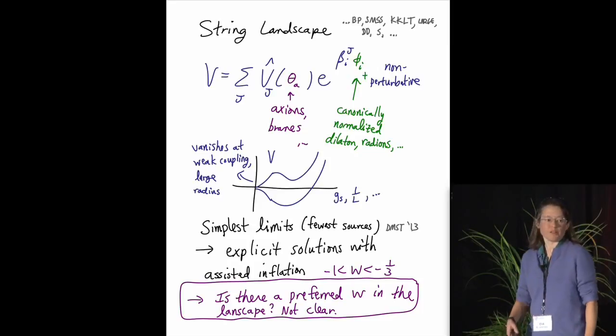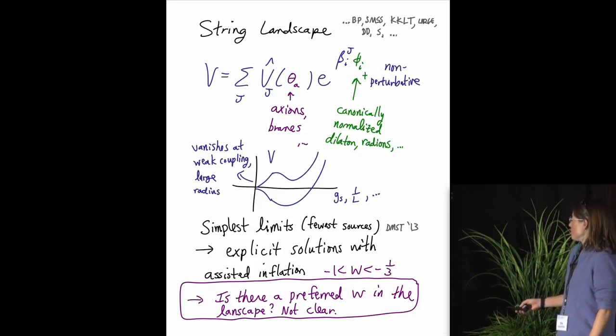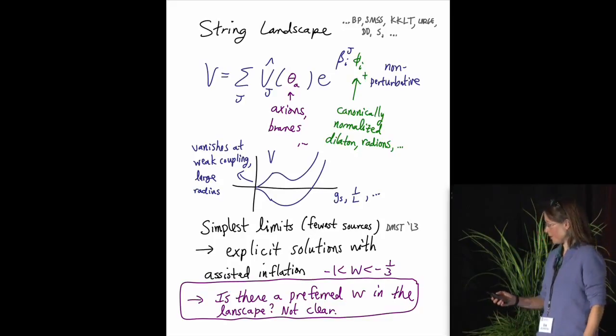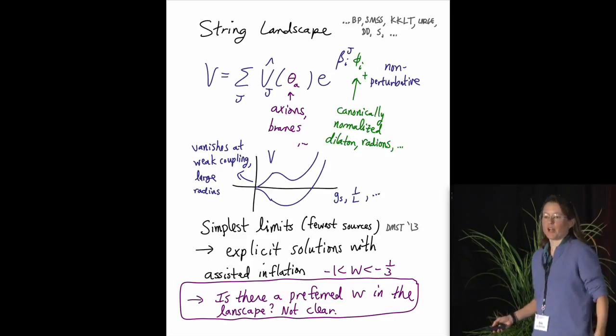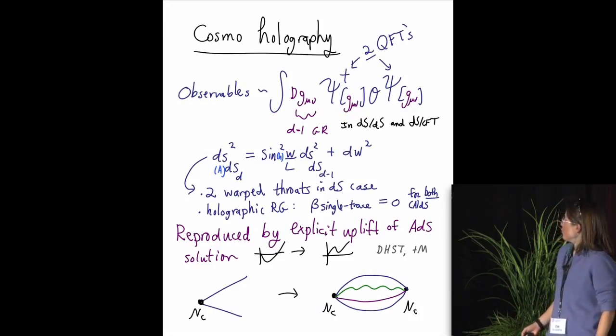And there's a question that remains in this whole business, which is, is there a preferred equation of state W in the landscape? It's really not clear, and it's hard to control the answer to that question, because of the dominant effect of the standard model in the problem, with many possibilities for how that couples to these various scalar fields.